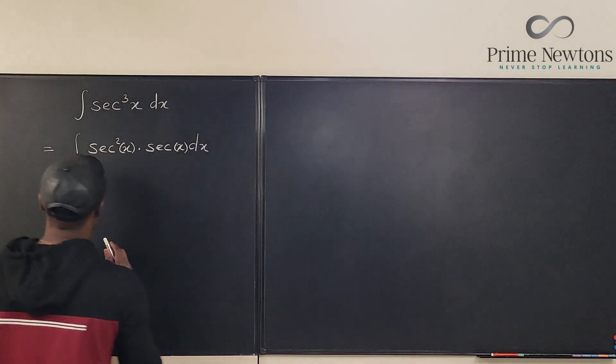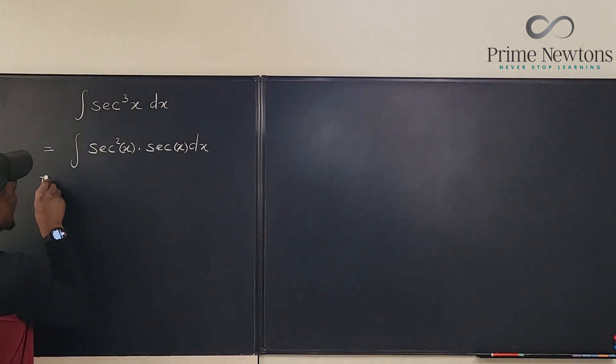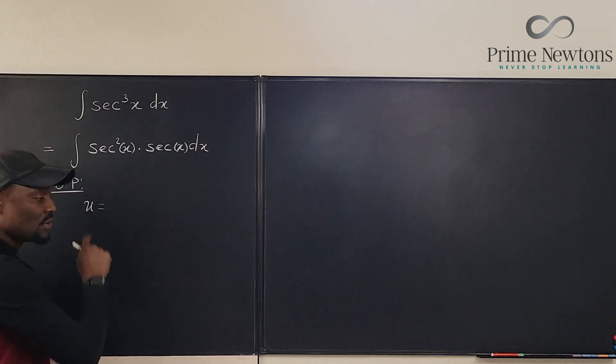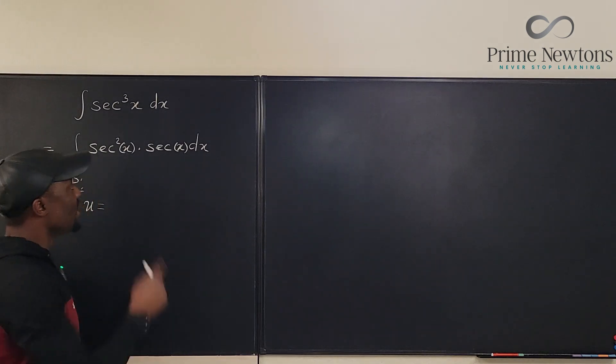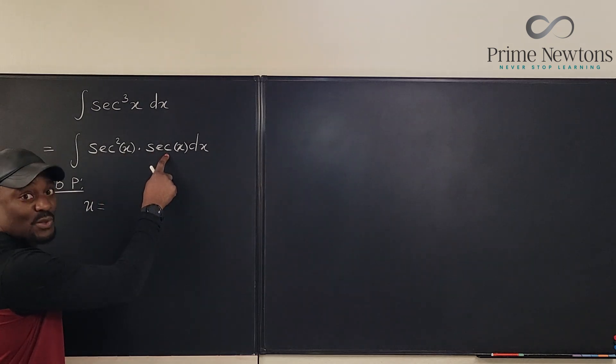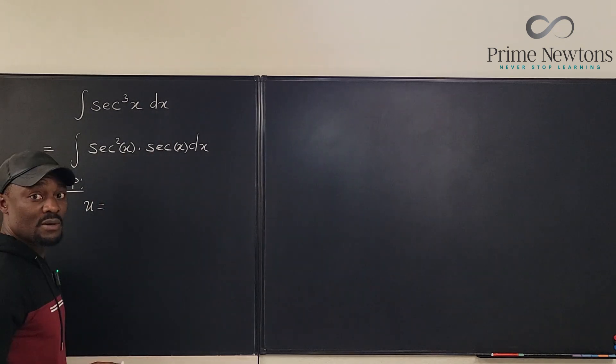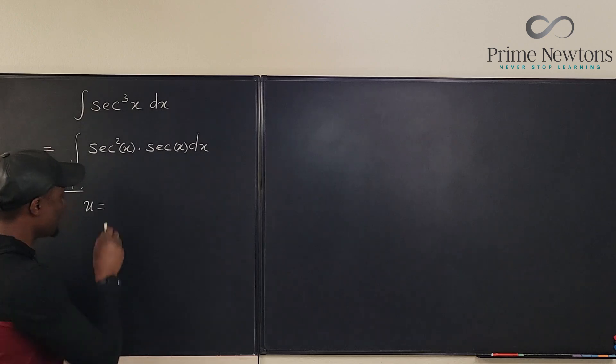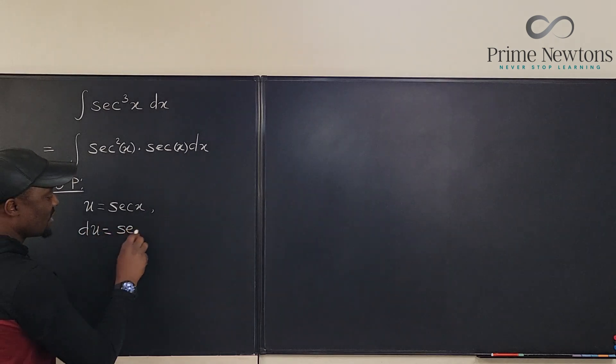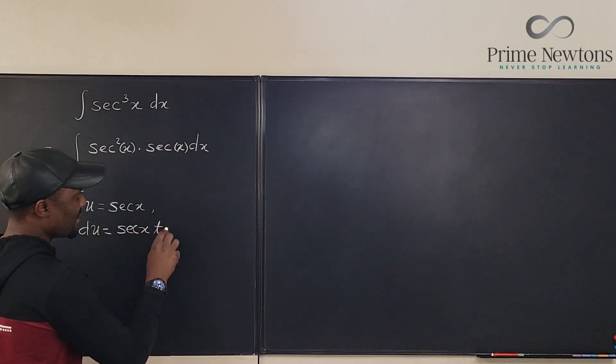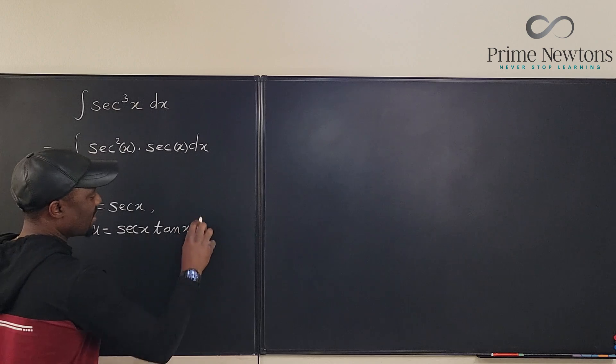We have to do our integration by parts. So we write integration by parts. And we say we're gonna make u, u is always the one you want to differentiate because you cannot integrate it. We cannot integrate this because we don't know how yet. So we're gonna make it our u. And we know that when you differentiate du, you're gonna get secant x tan x dx.